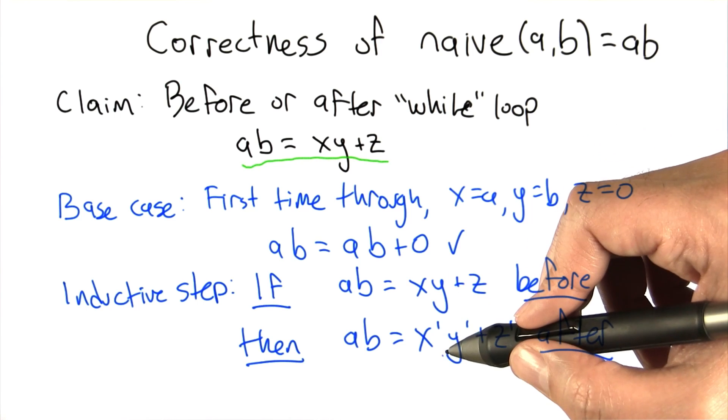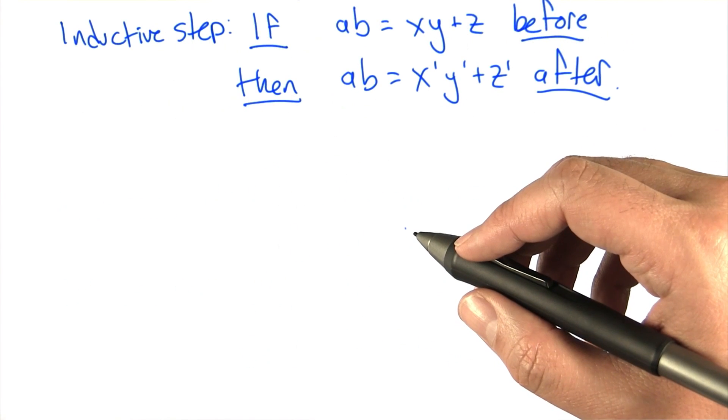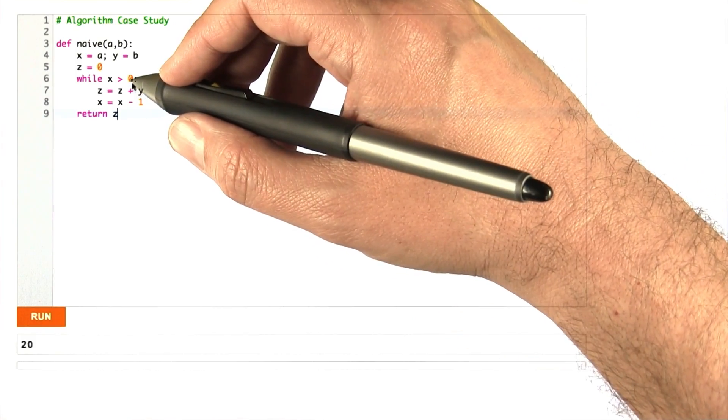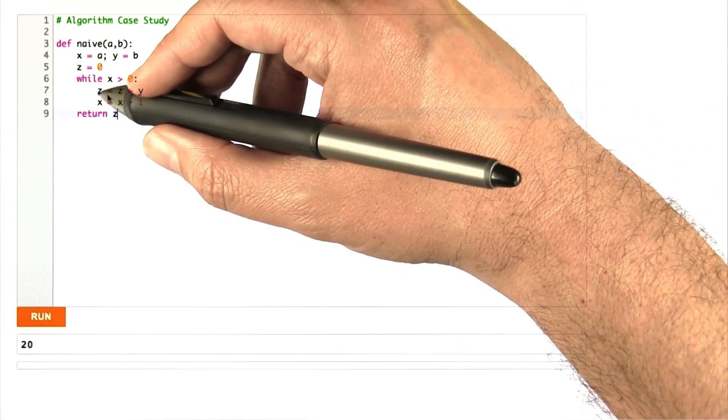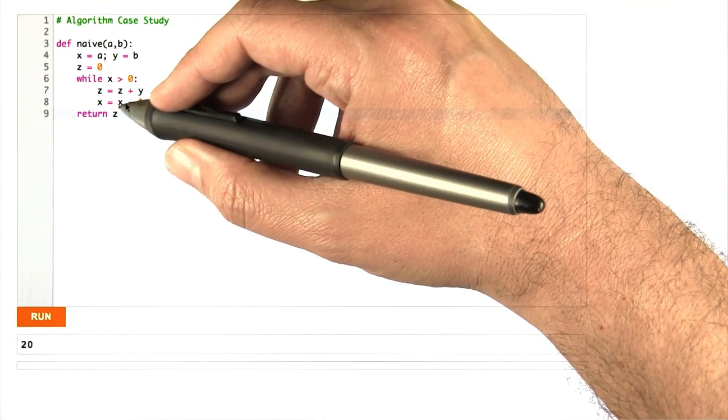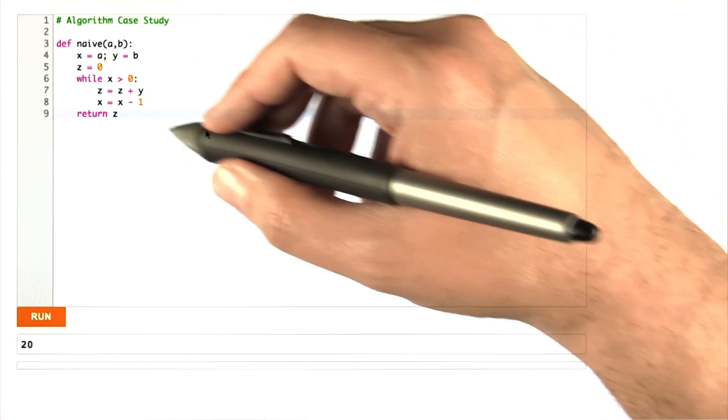So why would this be true? Let's remind ourselves what the code looks like again. What happens in each iteration of the loop is that a new value of Z is computed, which is the old value plus the value of Y, and a new value of X is computed, which is the old value minus 1.